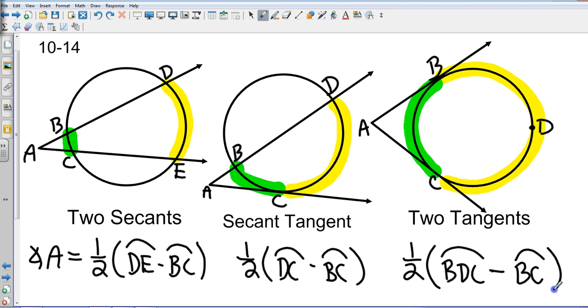Okay, so all three of those are very similar, larger arc minus the smaller arc, and then we're going to divide that by two or take one-half of it.